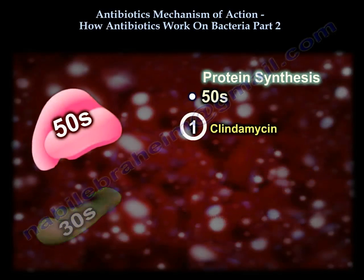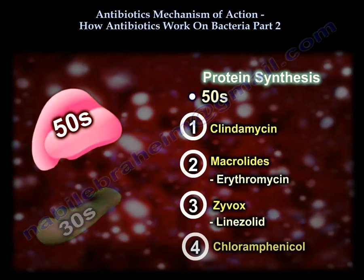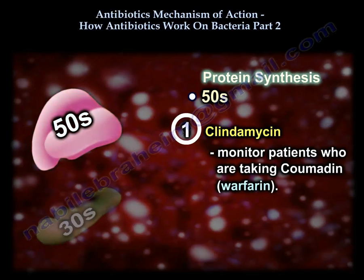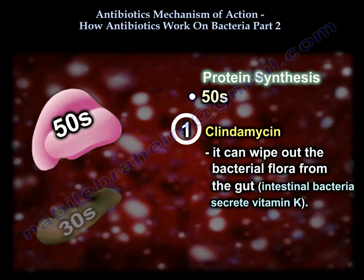The 50S subunit inhibitors are clindamycin, erythromycin, and linezolid. Clindamycin is important because it can cause pseudomembranous colitis — C. diff. Also watch patients taking warfarin and clindamycin: clindamycin wipes out the bacterial flora from the gut, so the body makes less vitamin K, meaning you don't need as much warfarin to interfere with that small amount of vitamin K. The INR will be really high at the standard warfarin dose.